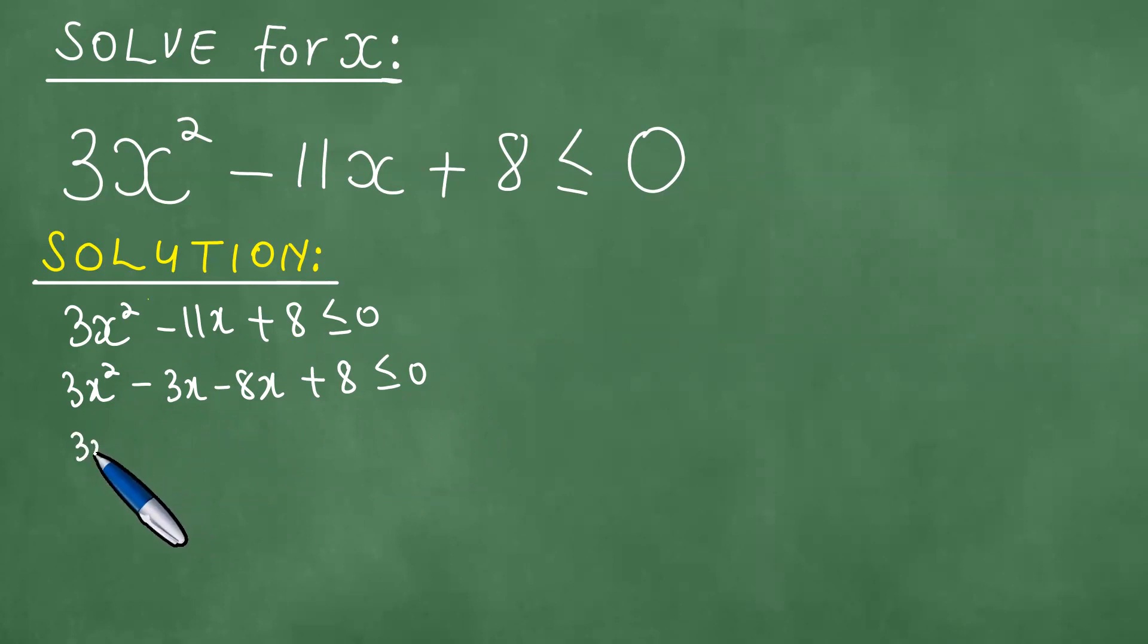Highest common factor here would be 3x leaving us with x minus 1. Minus 8 into x minus 1 is less than or equal to 0. We have x minus 1 into 3x minus 8 is less than or equal to 0.